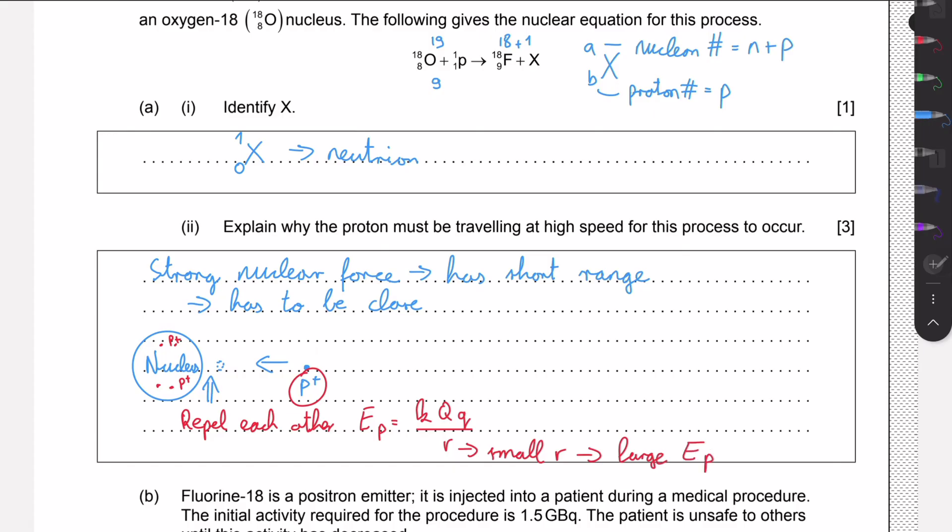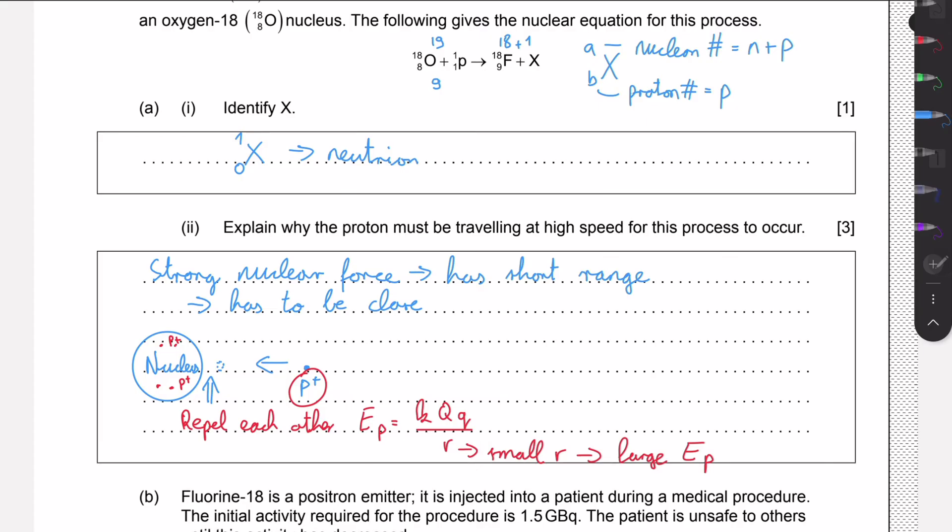We can calculate the potential energy. The electrical potential energy is just k big Q times small q divided by r. We see that if we have a small radius, then we have a large potential energy. For the proton to come really close, it must have a large potential energy when it reaches the nucleus. How can it have such high potential energy? It has to have a very high speed at the beginning.